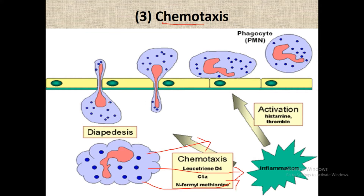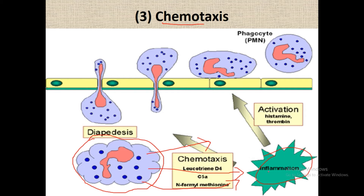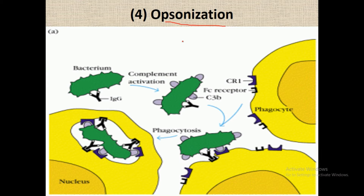The third step is chemotaxis. After the cell exits the blood vessel, it reaches the site of bacterial infection or wherever foreign material is present. The bacteria release different types of substances that cause local inflammation, and the phagocyte cell is attracted towards the different chemicals released by the bacteria. This stage is known as chemotaxis.